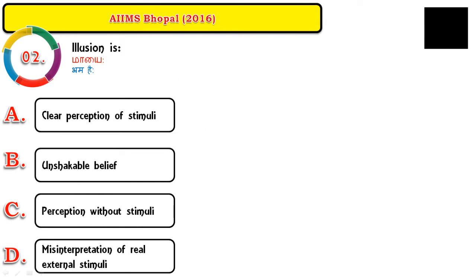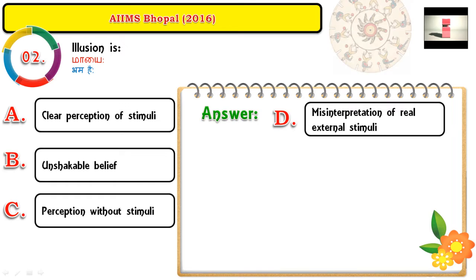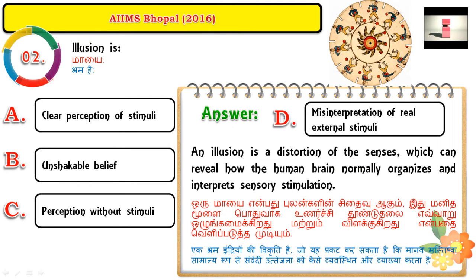Question number two: illusion is the misinterpretation of a real external stimulus. In illusion, the person sees a real object in the environment but misperceives it — whatever image they see is interpreted incorrectly by their perception.